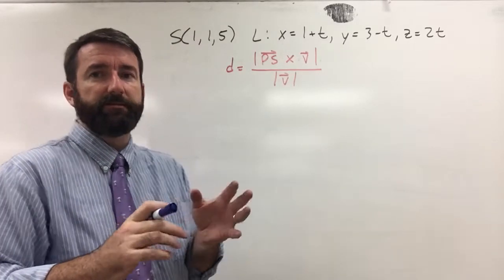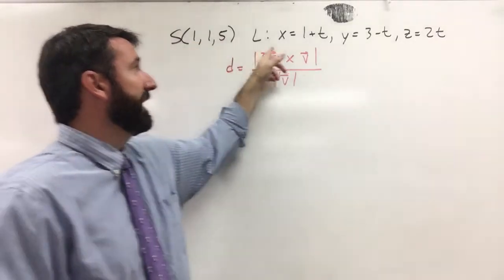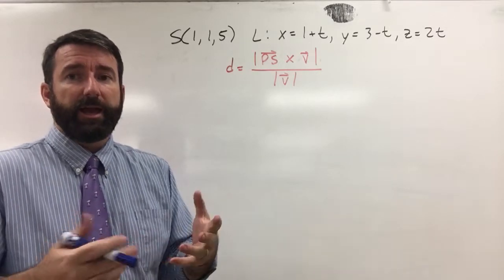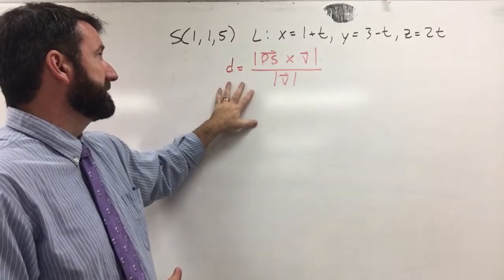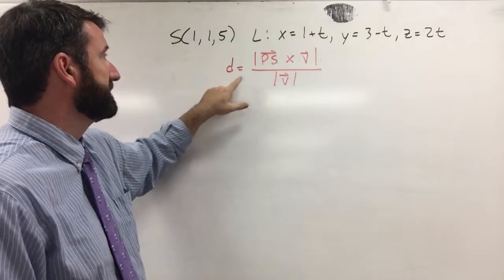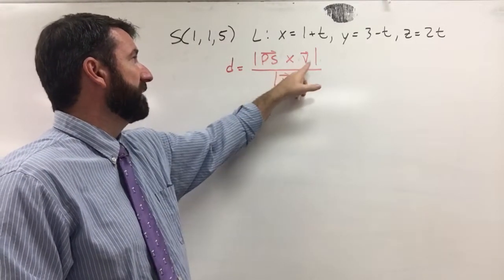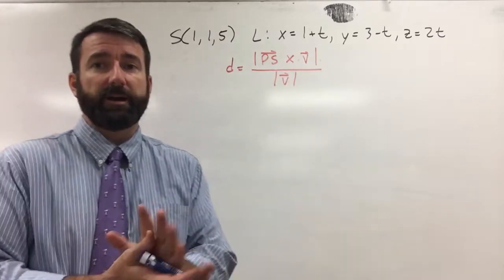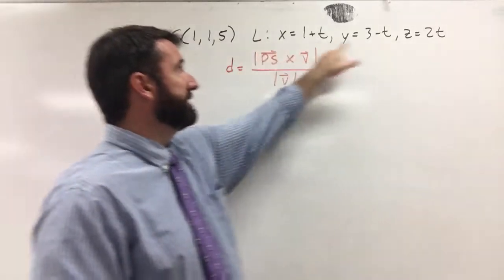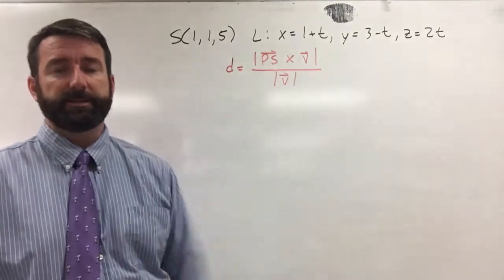In this example we're asked to find the distance between this point, (1, 1, 5), and the line given by those parametric equations. We know that the distance between a point and a line in space is going to be given by this formula: the distance is equal to the magnitude of PS cross V divided by the magnitude of vector V, where P is a point on this line and V is a vector parallel to that line.